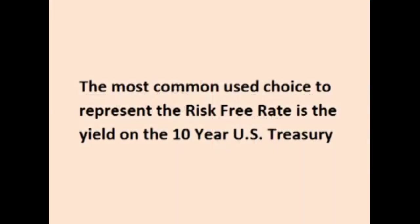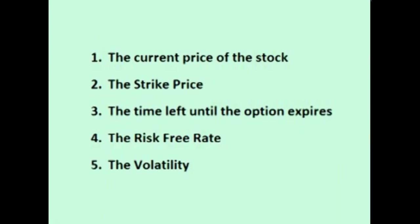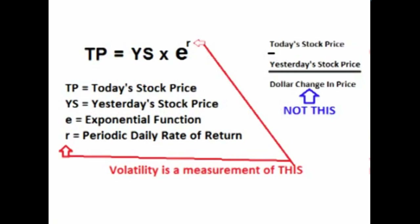For more on the time value of money, please watch the two-part series on the time value of money. The fifth and last input for option pricing is the volatility of the periodic daily returns — the rate of change or percent that the stock increases and decreases each day, not the change in dollar amount. The higher the volatility, the more that price goes up and down each day, and therefore the higher the likelihood that the price of the stock will move in favor of the option holder. Volatility is the largest factor in determining option pricing. In the next video, we will take a closer look at volatility. See you then.